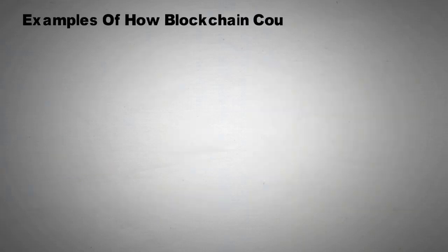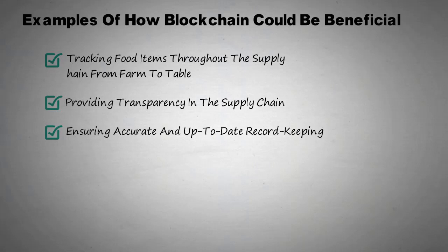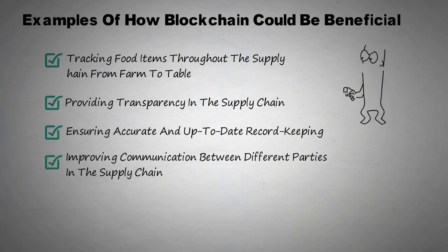Here are just a few examples of how blockchain could be beneficial for groceries and other venues within the sector: tracking food items throughout the supply chain from farm to table, providing transparency in the supply chain, ensuring accurate and up-to-date record keeping, improving communication between different parties in the supply chain, reducing the risk of fraud and corruption, improving food safety and quality, and protecting the environment.